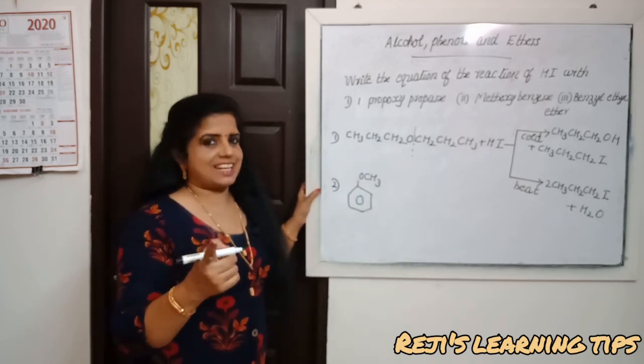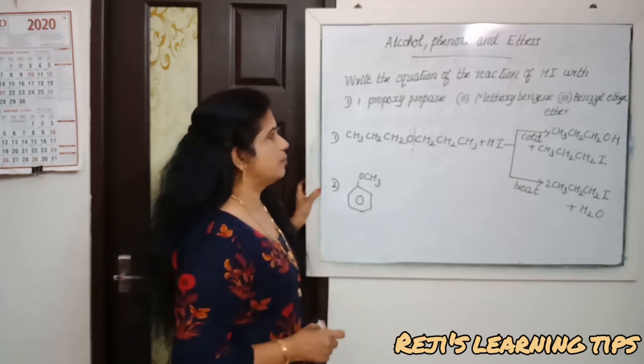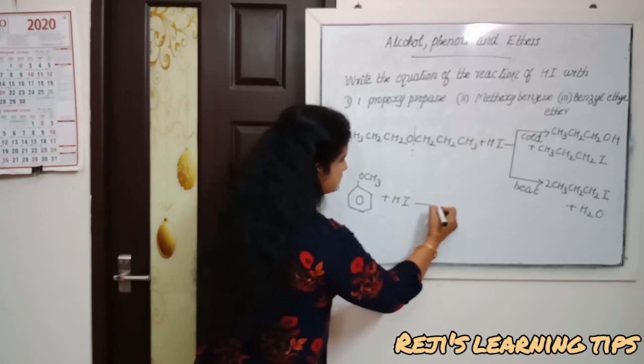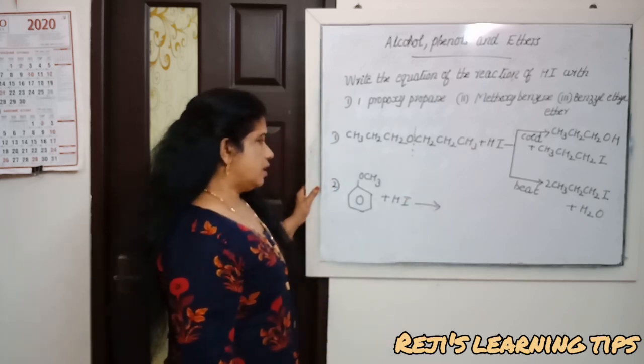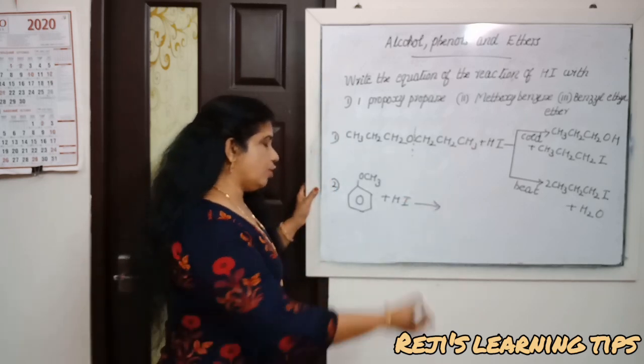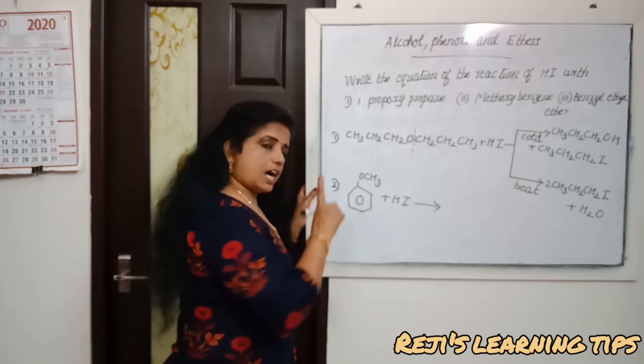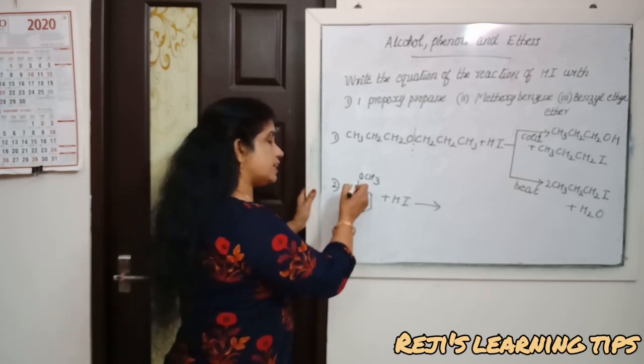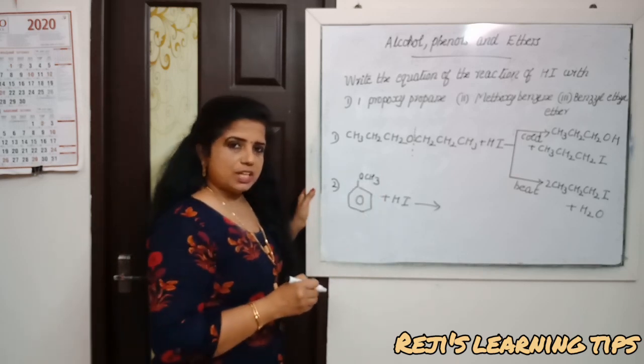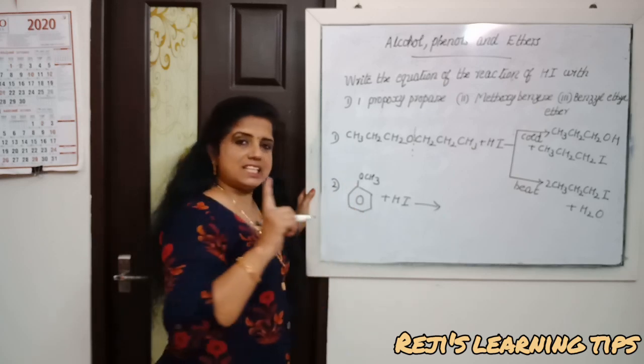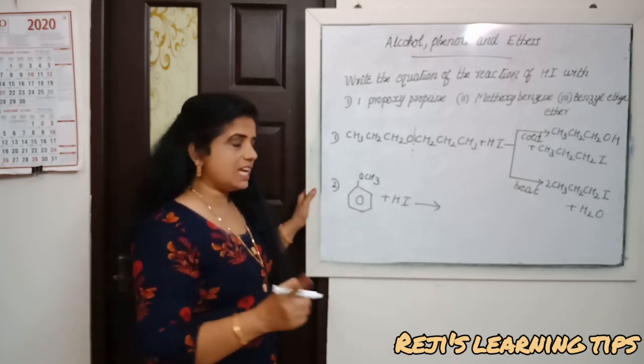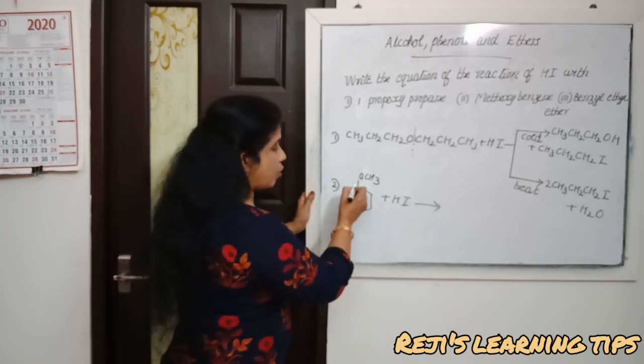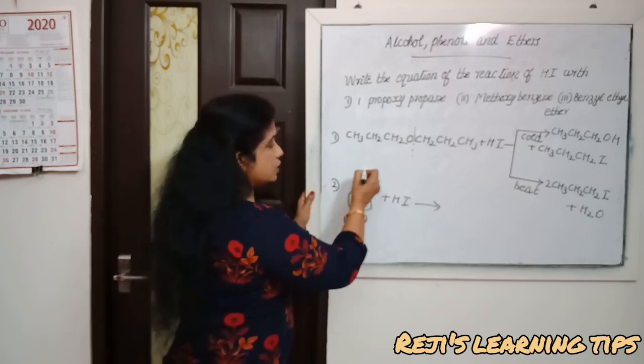We know in the case of anisole, it is very difficult to break the bond between the phenyl group because the phenyl carbon is sp2 hybridized and has partial double bond character. So it is very difficult to break the bond here.